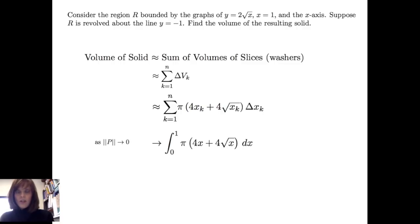I let the norm of the partition go to 0 and develop the definite integral from 0 to 1 of pi times 4x plus 4 times the square root of x dx, which we can easily integrate. We get pi times 2x squared plus 8 thirds x to the 3 halves power evaluated at the endpoints from 0 to 1 to get a total volume of 14 pi over 3 cubic units.